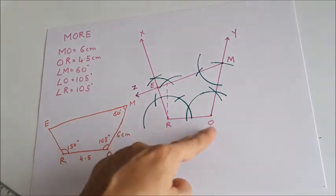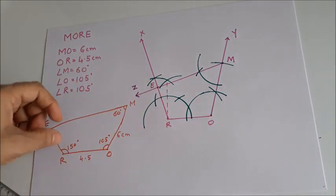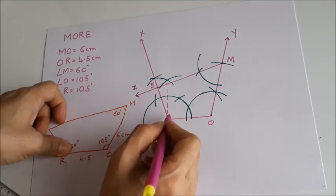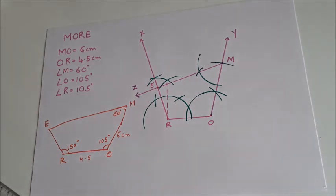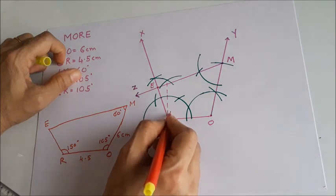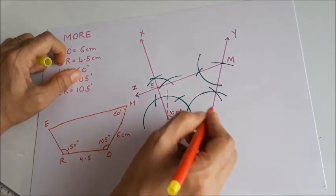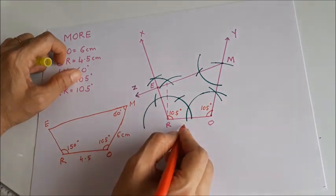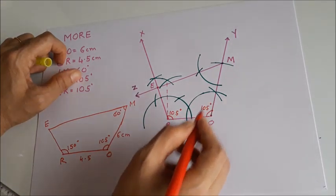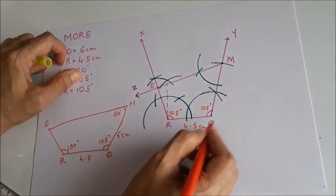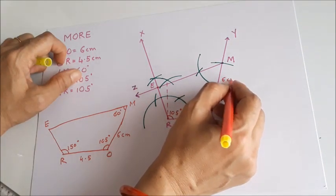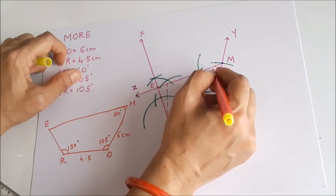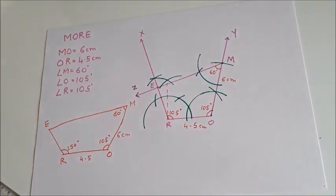So our quadrilateral MORE is ready with the given measurements. The measurements are: angle R is 105 degrees, angle O is 105 degrees, RO is 4.5 centimetres, OM is 6 centimetres, and angle M is 60 degrees.